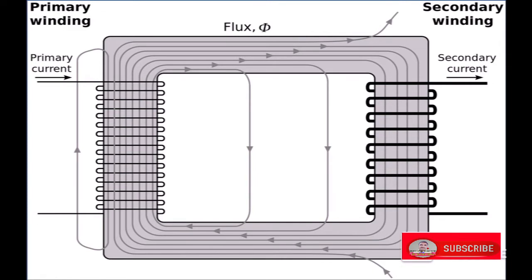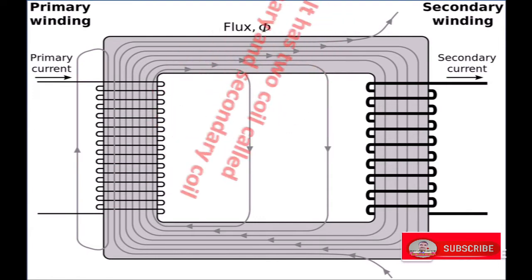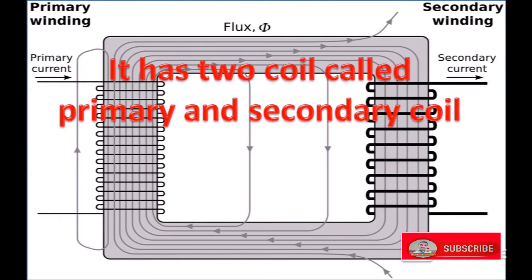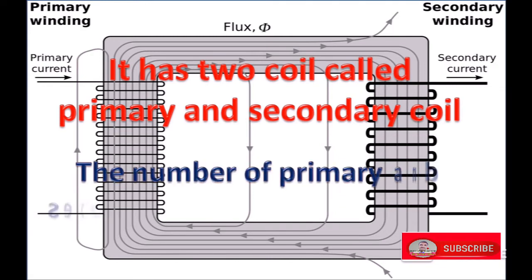It has two windings: primary winding, or primary coil, through which input current is passed to the transformer, and secondary winding, or secondary coil, through which output current is produced. Due to the input current, flux gets developed in its primary and secondary coils, which have different numbers of windings.